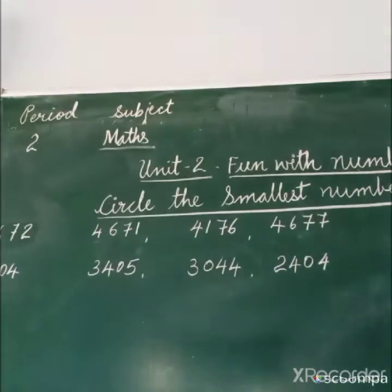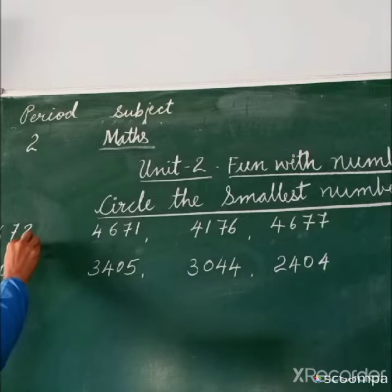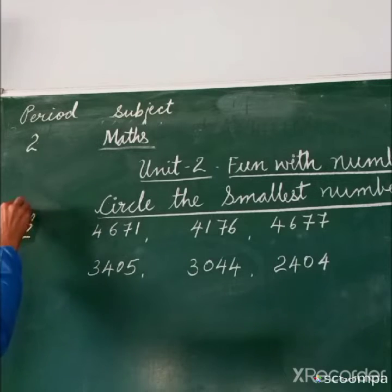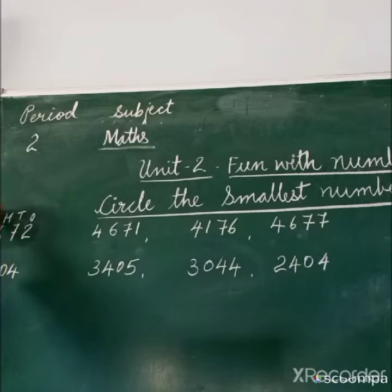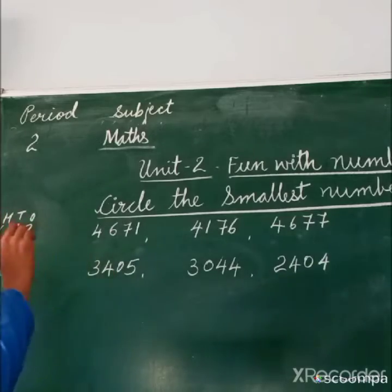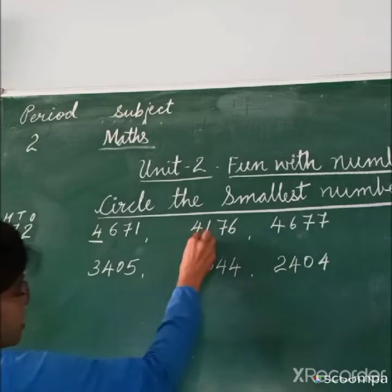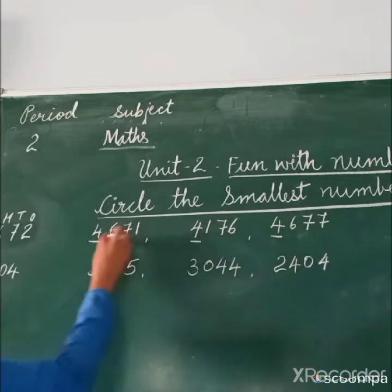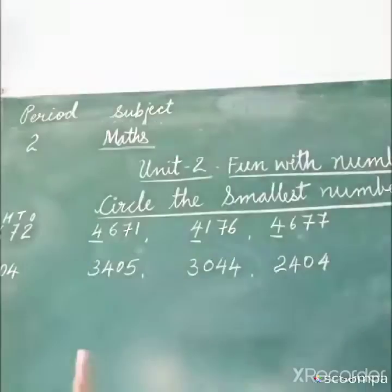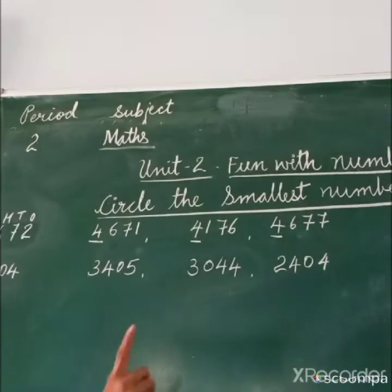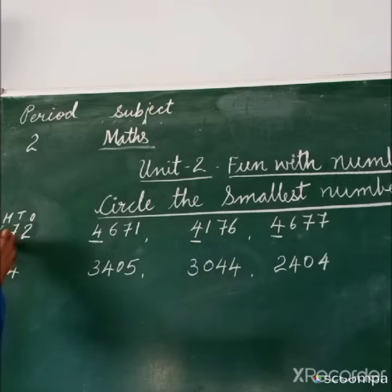How to find out smallest number? You have to see. This is 1s, 10s and 100s, 1000s. Like that you have to divide and first you have to see. Now not 1s place, you have to see 1000s place. Which number is there? Here everywhere is 4. Then you have to see 100s place, which number is there.